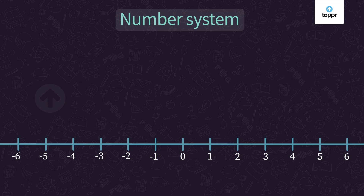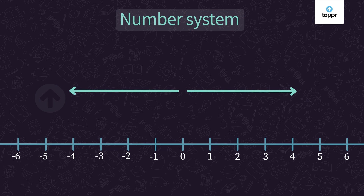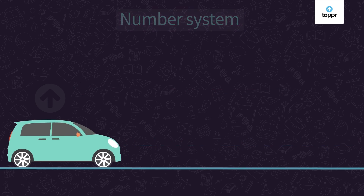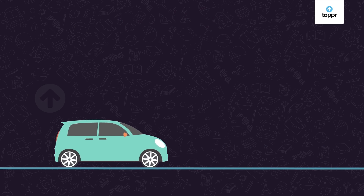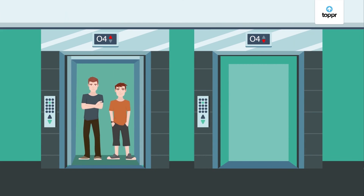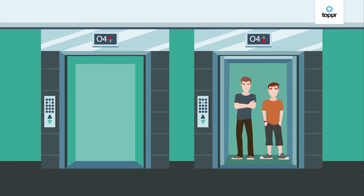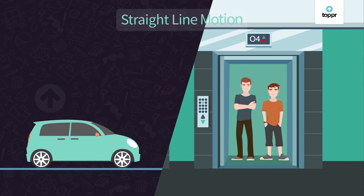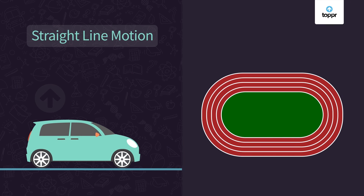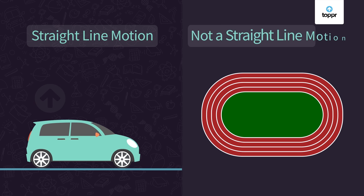In straight line motion, an object can only move forward and backward in a straight line. So the motion of a car on a straight road or the upward and downward motion of a lift are examples of motion in a straight line. But the motion of an athlete around a ground is not a straight line motion.